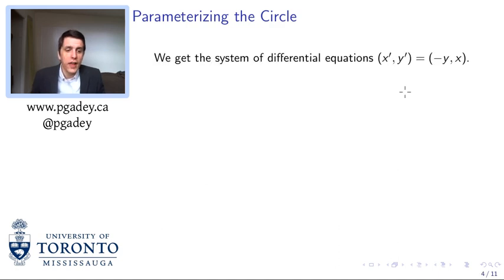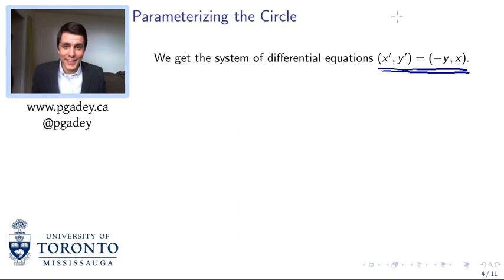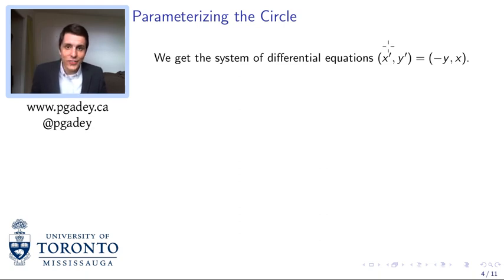Just to refresh our picture: we've got this unit circle and we're walking along it with speed one. Our parameterization p of t has the property that it is always speed one, and that forces a particular choice of lambda on us. From this definition we get a particular property of the derivatives of our function: if we've got a parameterization of unit speed, then x prime has to be negative y and y prime has to be x.